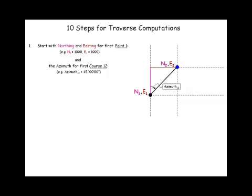In addition to azimuth, we need to work with the departure and latitude. Latitude and departures are the projection of the distance d1 to 2. So that's the distance of course 1 to 2.